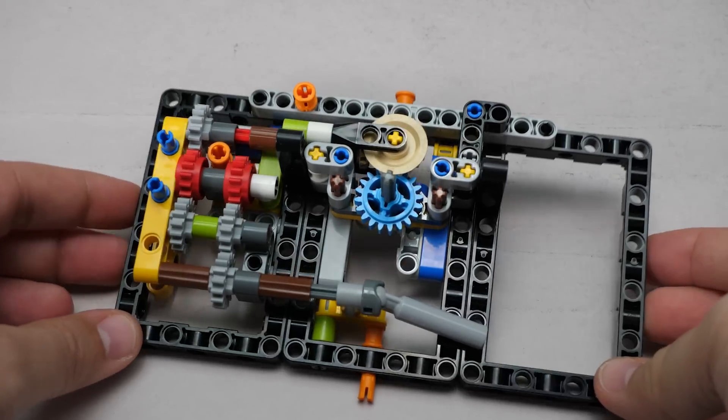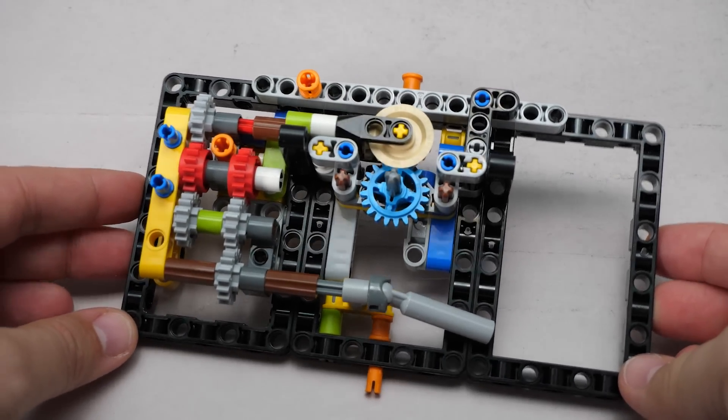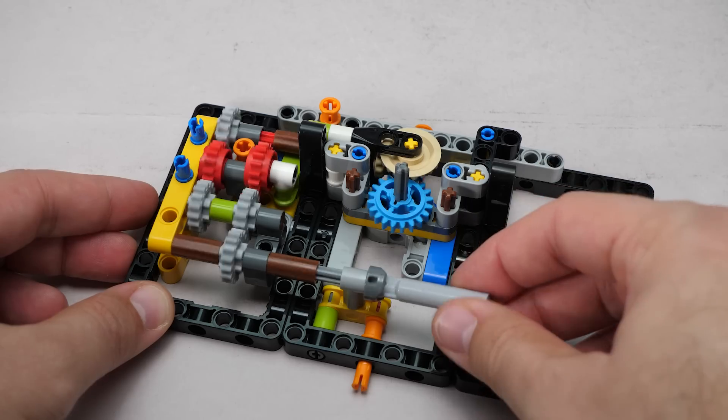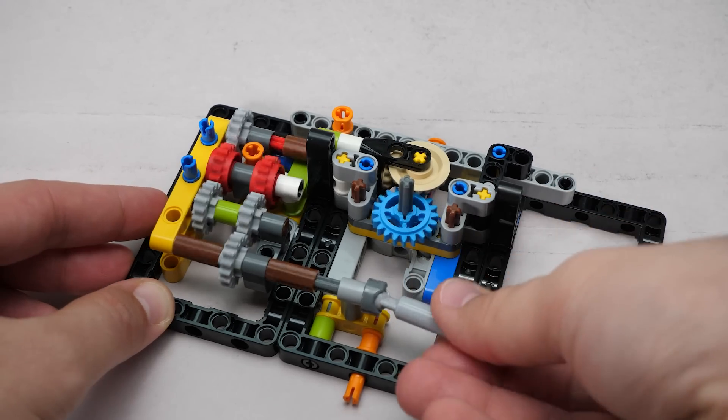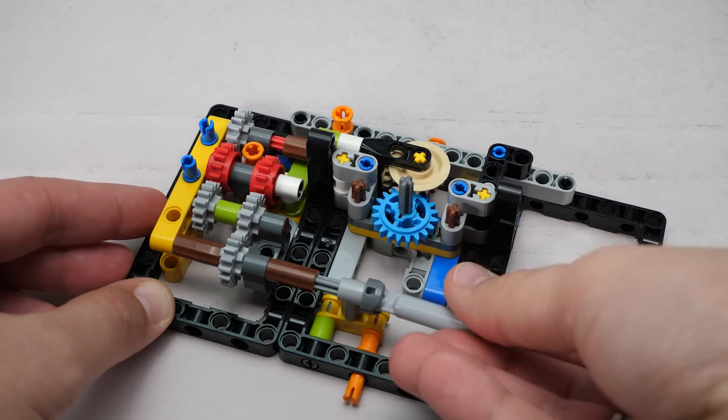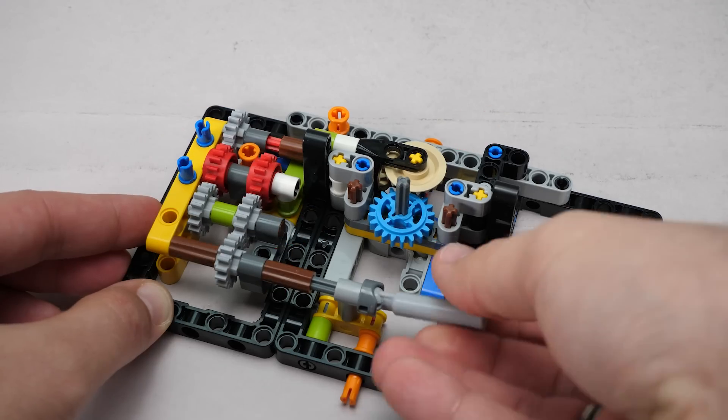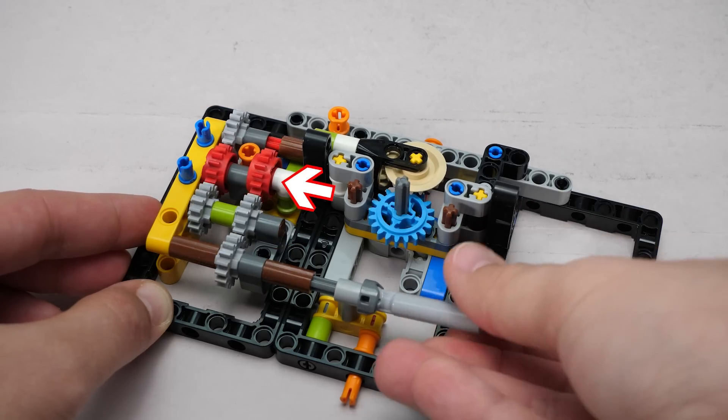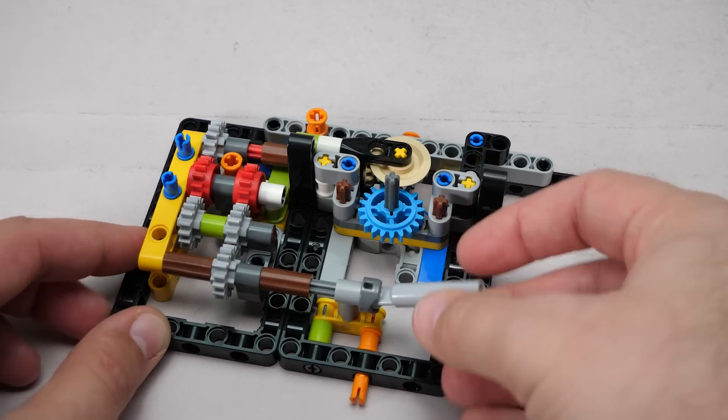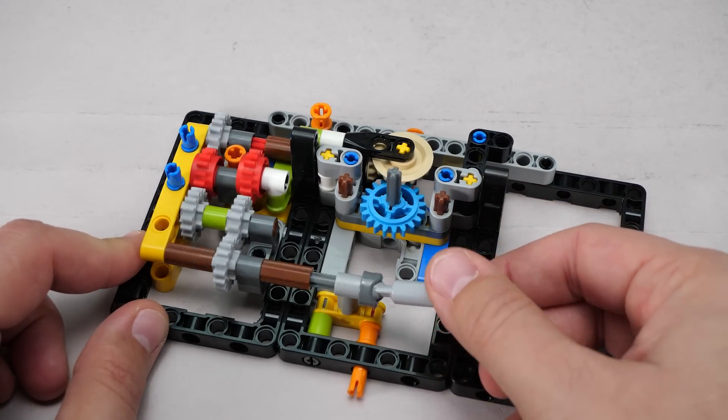By the end of bag 1 we get to test the sound generator. Yes, this set has a clever little mechanical sound system built in. When you rotate the crank, the force passes through these gears regardless of the direction. This one gear handles the noise, it stays silent in descent mode but creates this sound in takeoff mode.